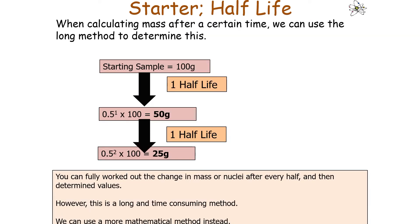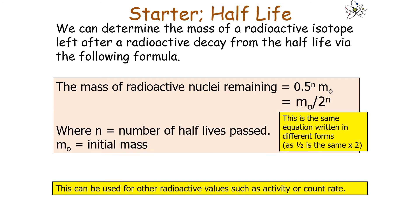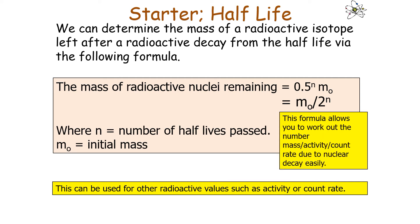We can use this to work out a formula. The mass of radioactive nuclei remaining is 0.5^n multiplied by the initial mass, where n is the number of half-lives passed. Alternatively, this can be written as the initial mass divided by 2^n. Both forms are equivalent, since multiplying by a half is the same as dividing by 2. This formula must be remembered for your examination.